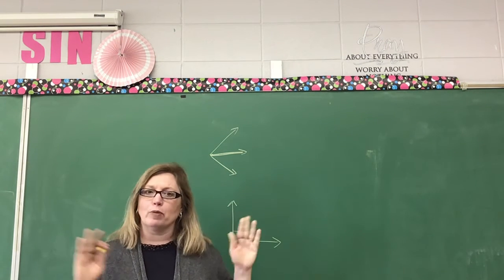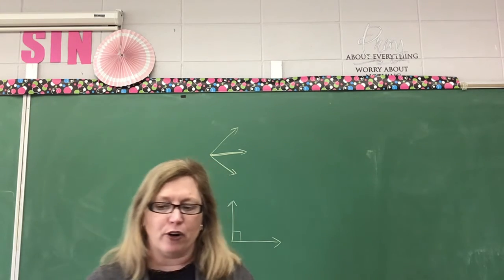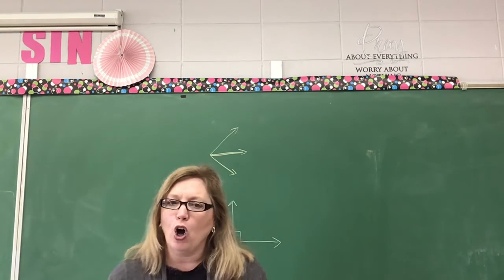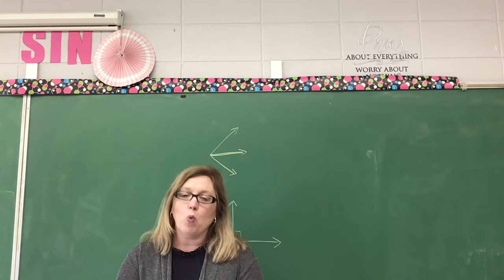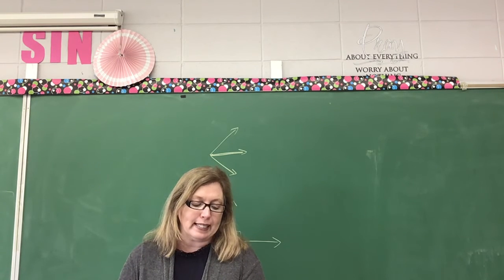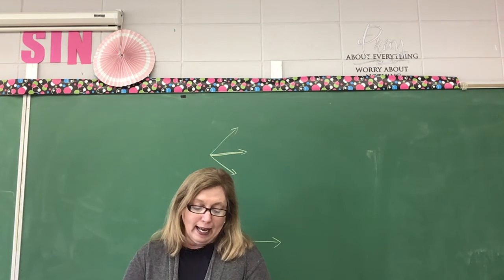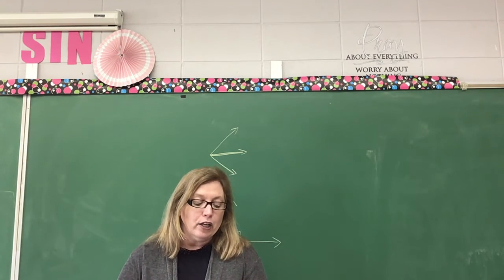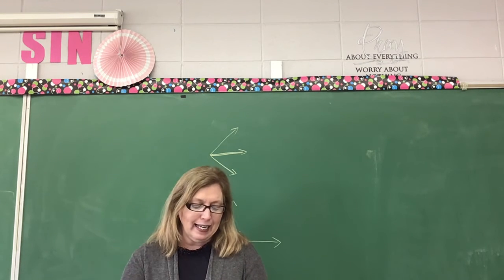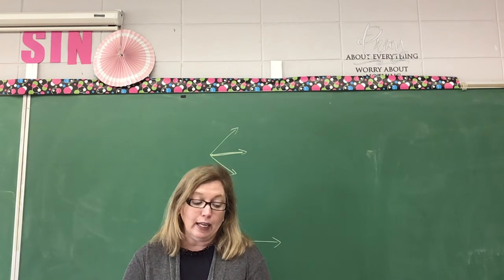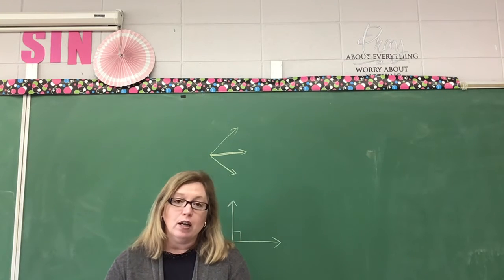All triangles, no matter how large or how small, when you add the angles together, what do the angles equal? All the angles of a triangle will equal 180 degrees. When you have two angles that equal 90 degrees, we would say that those two angles are complementary.